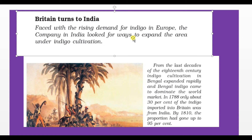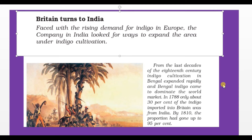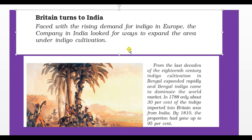When there was intense rivalry and competition, the British decided to turn towards India. Faced with the rising demand for Indigo in Europe, the East India Company in India looked for ways to expand areas under Indigo cultivation. From the last decades of the 18th century, Indigo cultivation in Bengal expanded rapidly, and Bengal Indigo came to dominate the world market.